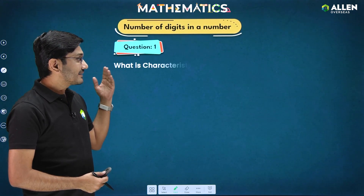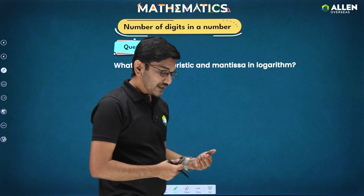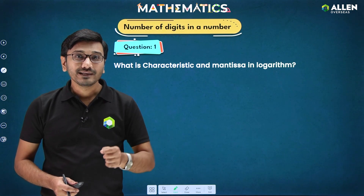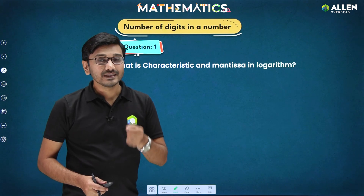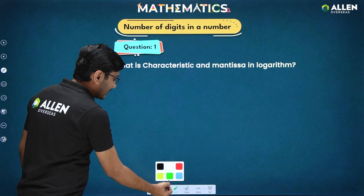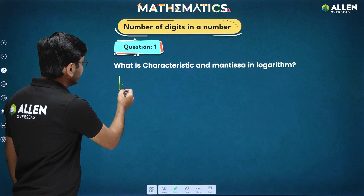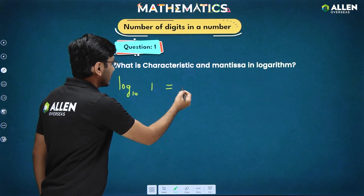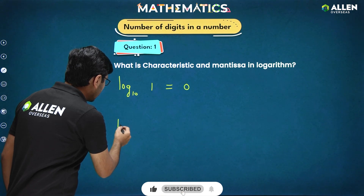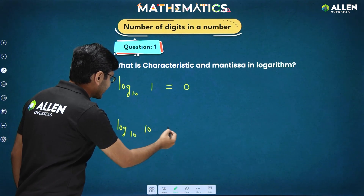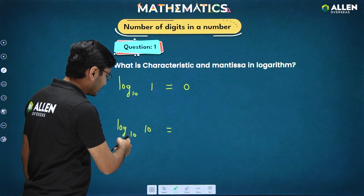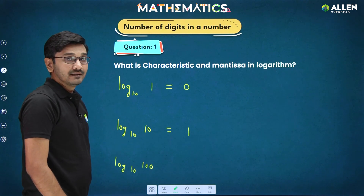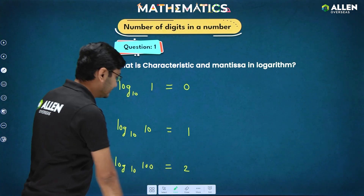First we will study what is the characteristic and mantissa of the logarithm. In our previous videos we studied logarithmic basics like how to solve logarithmic equations and logarithmic inequalities — links are in the description. Now, whenever we calculate logarithm base 10: log of 1 is 0, log of 10 to the base 10 is 1, and log of 100 to the base 10 is 2.